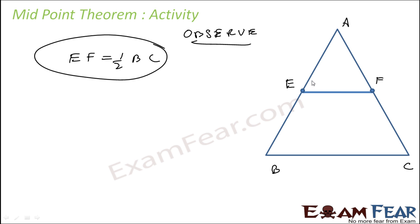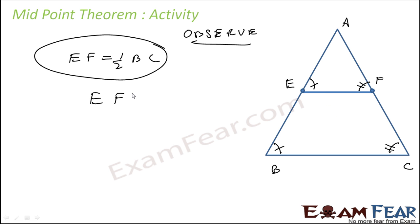Also, you'll observe that angle AEF and angle ABC are always equal, and angle AFE and angle ACB are always equal. You can measure this with a protractor. Since these corresponding angles are equal, that means EF is always parallel to BC.